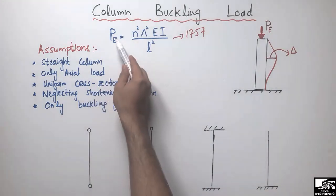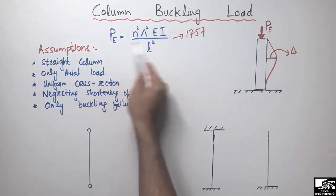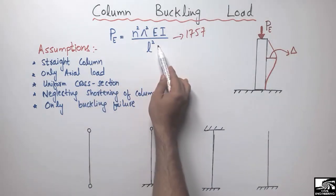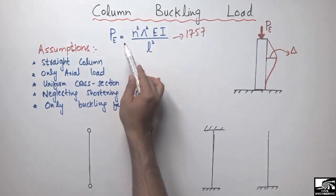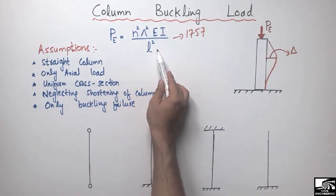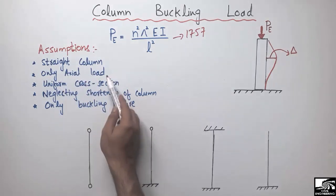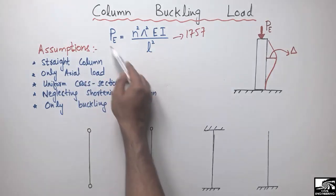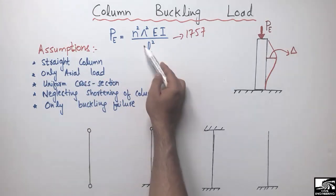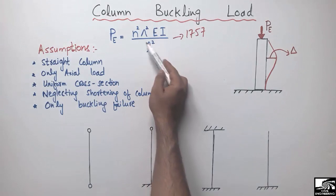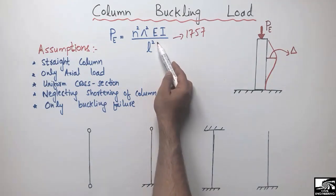This formula is called the Euler buckling formula. It has certain assumptions, and by fulfilling these assumptions we can use the Euler buckling formula to calculate our buckling load.